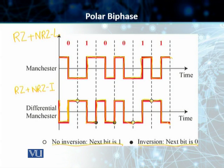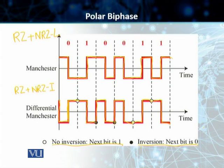The Manchester scheme overcomes quite a few problems that we had with NRZ-L, and differential Manchester overcomes quite a few problems that we had with NRZ invert. The major problem of the DC component does not exist in this case because each bit has both a positive and a negative voltage level. The only disadvantage of these two techniques is the signal rate — the signal rate for both Manchester and differential Manchester is actually double that for the NRZ schemes. The reason is that there is always one transition at the middle of each bit, and depending upon the inversion, there can be a transition at the end of the bit as well.